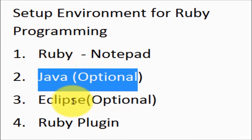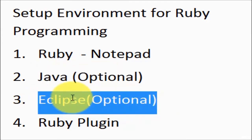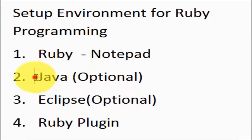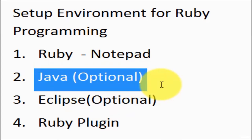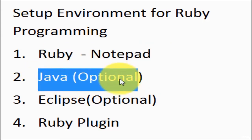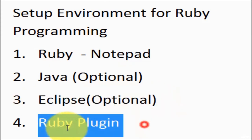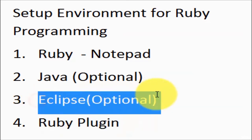Java is the prerequisite for Eclipse. Because we want to install Eclipse and write Ruby code there, we need to set up Java first. Once we complete the Eclipse installation, we need a Ruby plugin on Eclipse, because by default Eclipse comes for the Java programming language. If you want to write Ruby code on Eclipse, then we need the Ruby plugin.